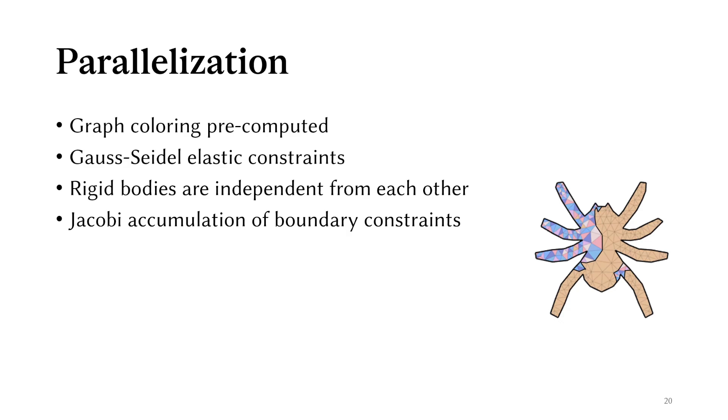Then we need to handle the rigid bodies. For a layer, all the rigid bodies are independent, otherwise they would be merged during the building process. The rigid bodies create a lot of new coupling because of the distance constraints at the boundaries, and because of that we parallelize these constraints like a Jacobi solve. So we solve them all at the same time and accumulate their force contributions.